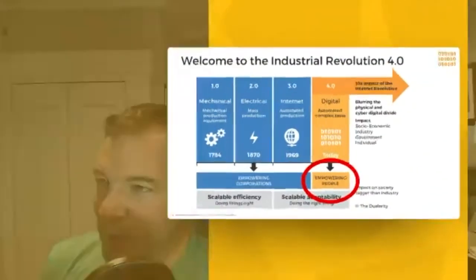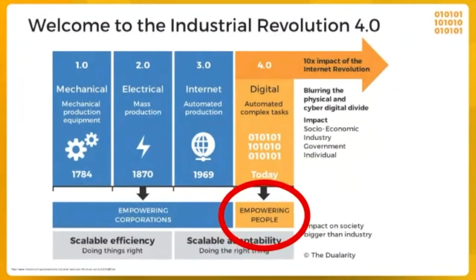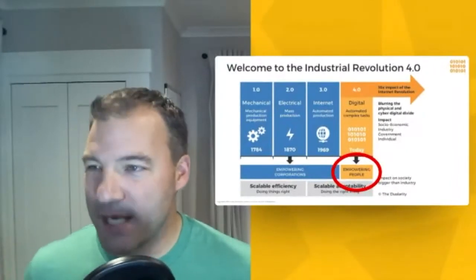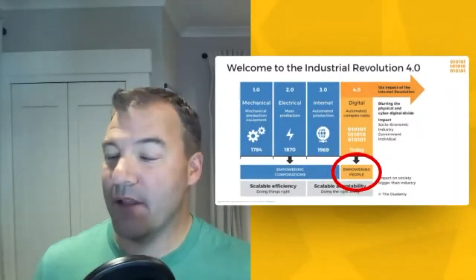The other part of this is where we are globally. This has propelled us into what is known as the fourth industrial revolution—we're past the age of the internet and into a digital automated complex task era. But if we actually look at this, it's not about the computers. The part I've circled at the bottom is what it's doing for people: empowering people.